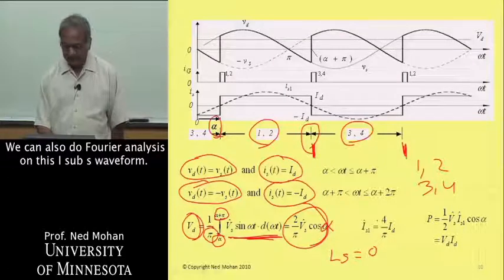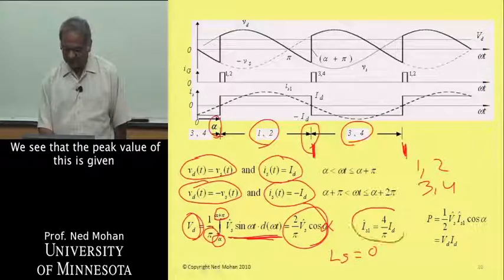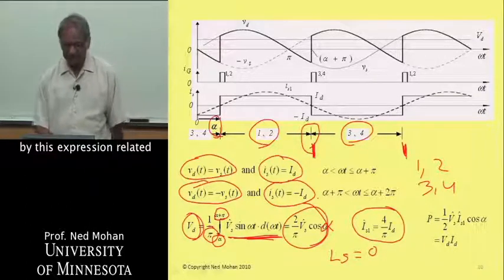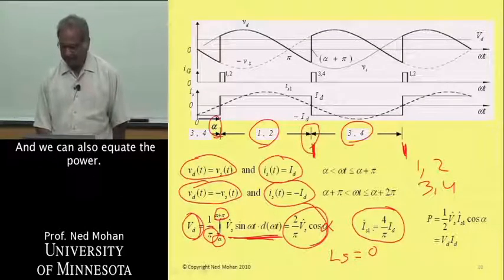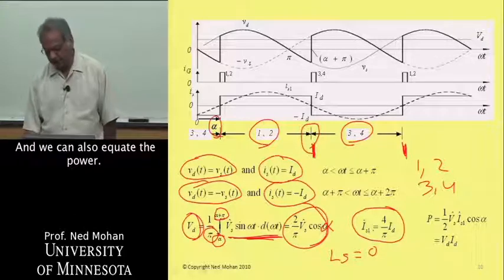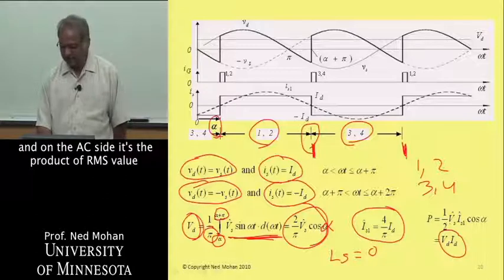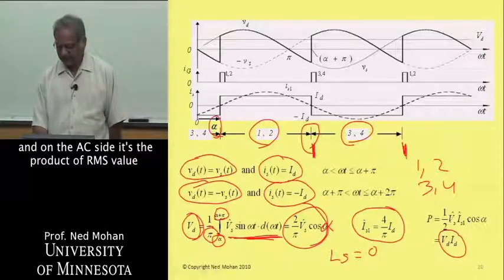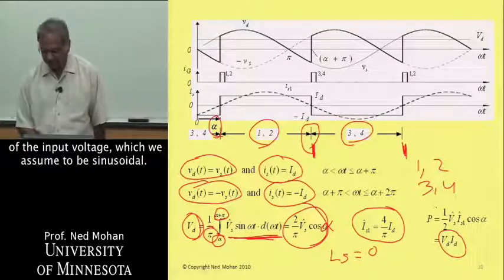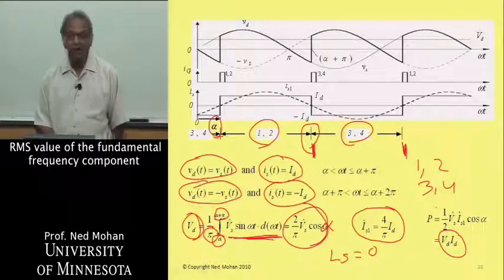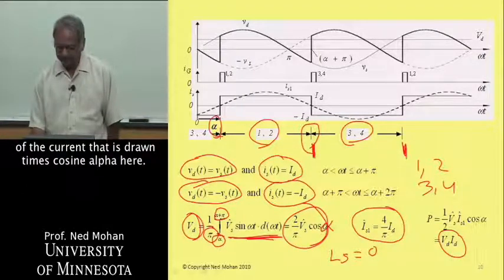We can also do Fourier analysis on the I_s waveform. The peak value is given by an expression related to how much DC current flows on the DC side. We can also equate the power: the power on the DC side is V_d times I_d, and on the AC side it's the product of the RMS value of the input voltage — assumed sinusoidal — times the RMS value of the fundamental frequency component of the current drawn, times cosine alpha.